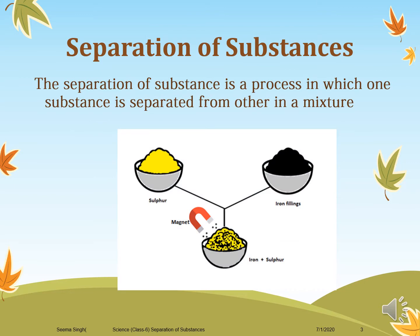First, let's understand what separation of substances means. The separation of substances is a process in which one substance is separated from another in a mixture. When we have a mixture of two or more substances and we need to divide these substances into their individual components from a mixture, this process is called separation.